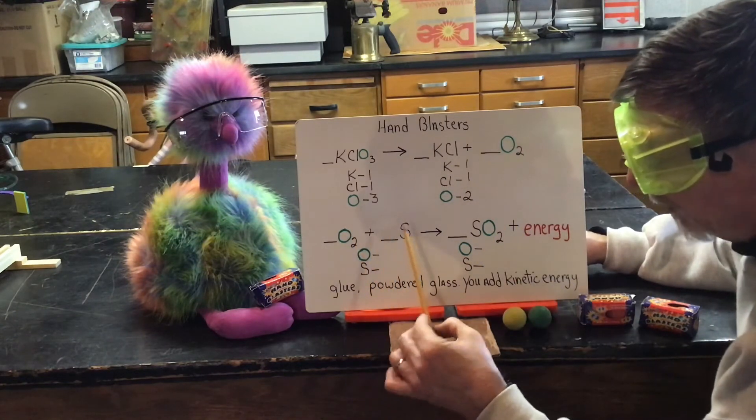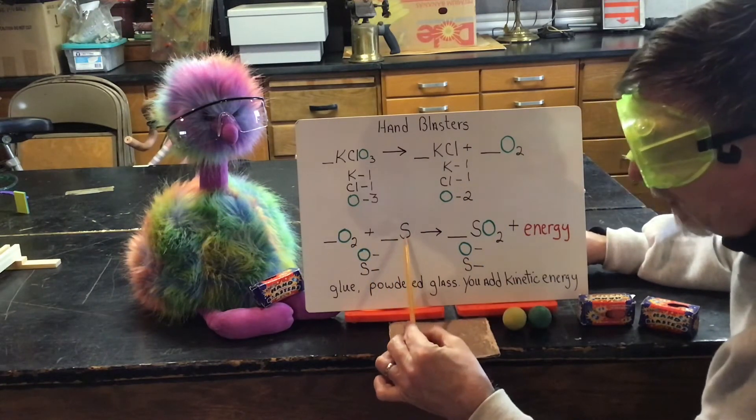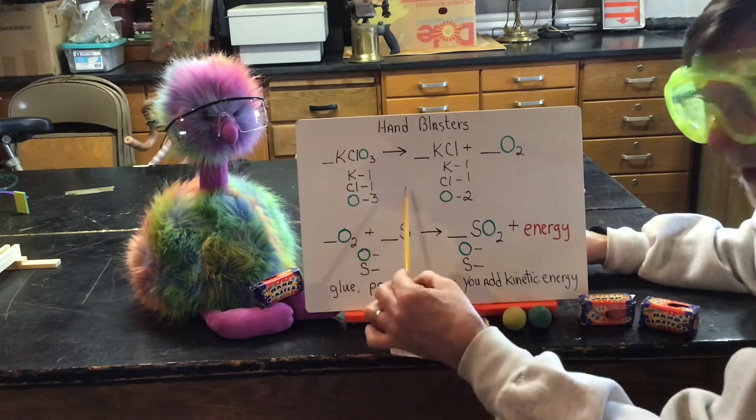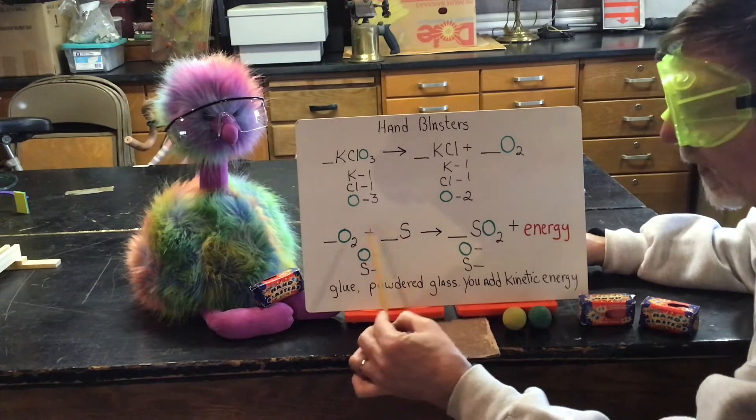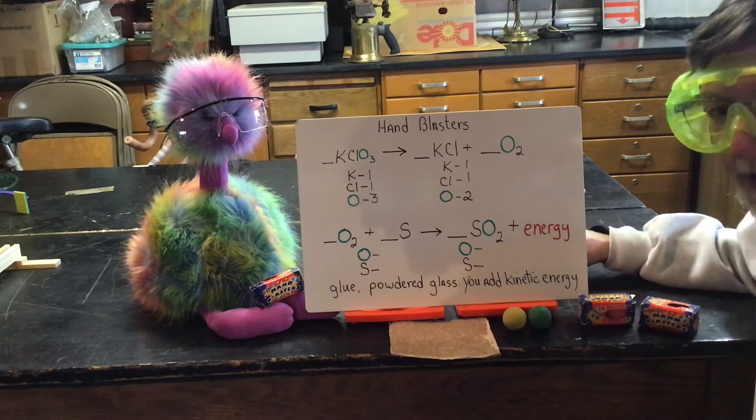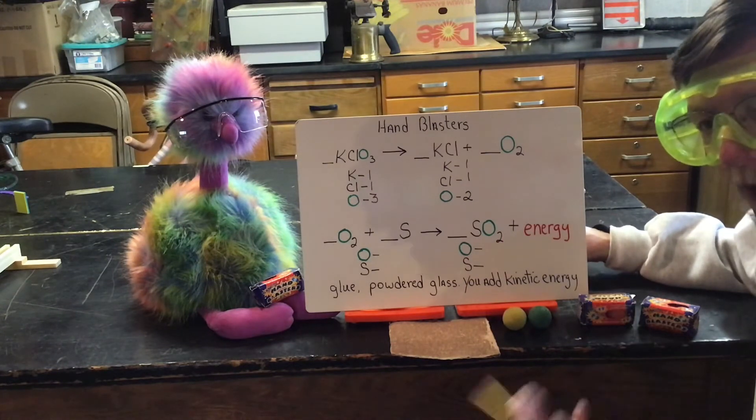Well, sulfur also is heated up with the same friction the potassium chloride is heated up. So, both these reactions are going on simultaneously. Sulfur grabs the oxygen and turns into sulfur oxide. That's the burnt match fireworks.